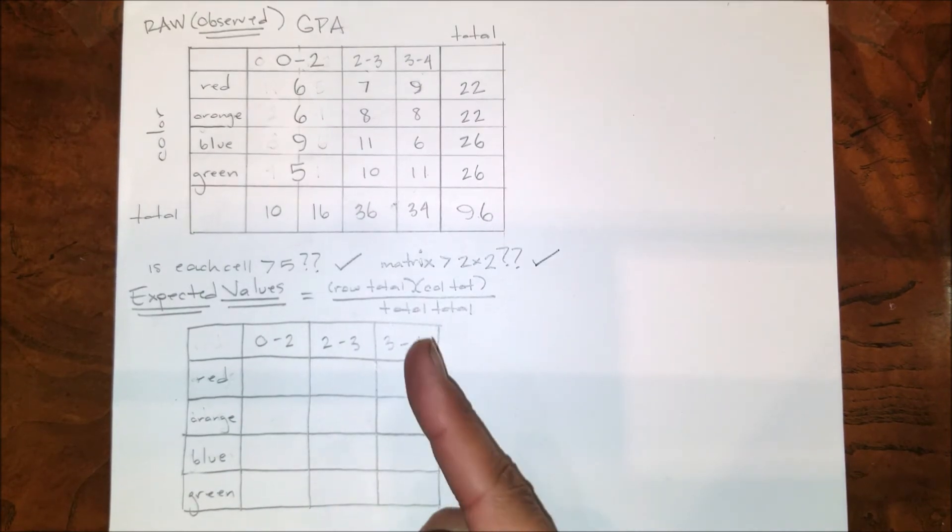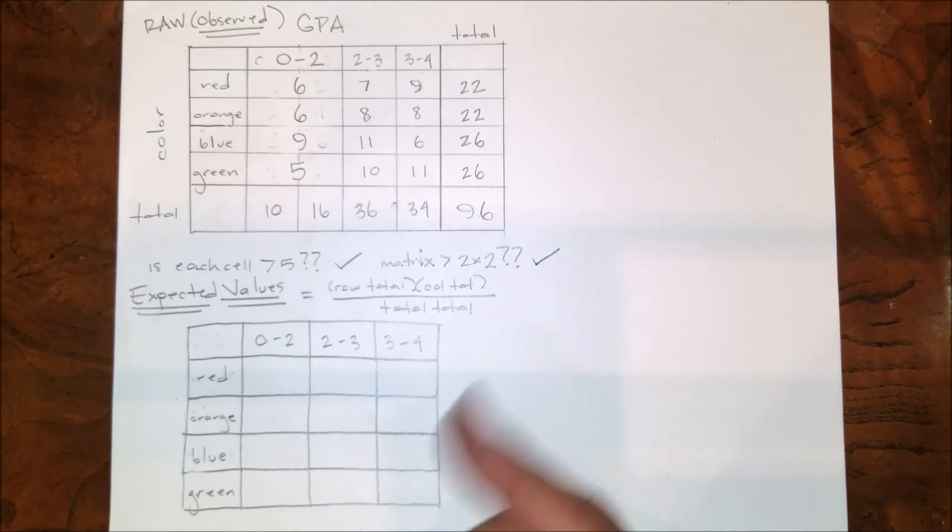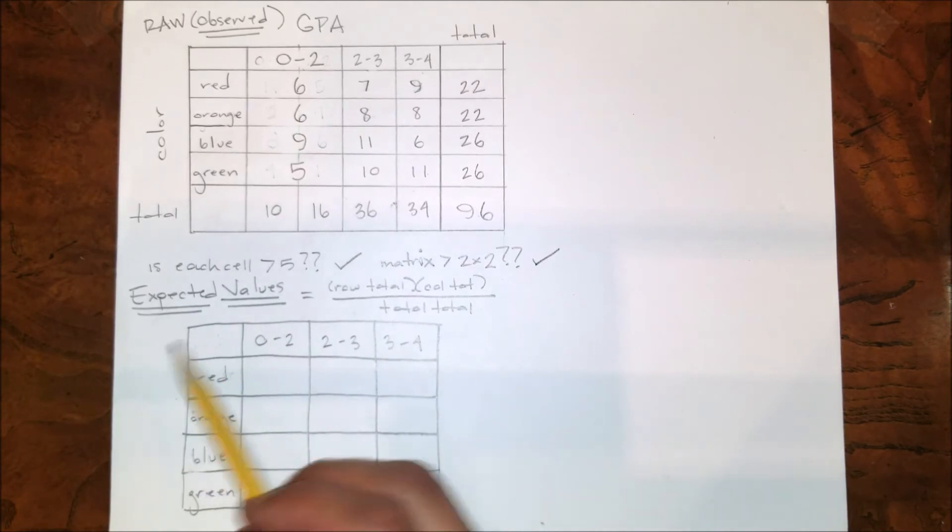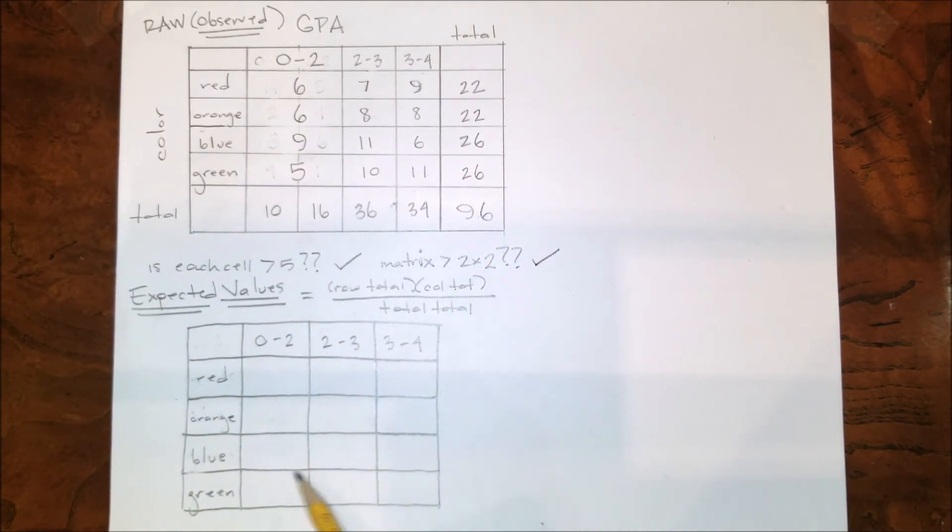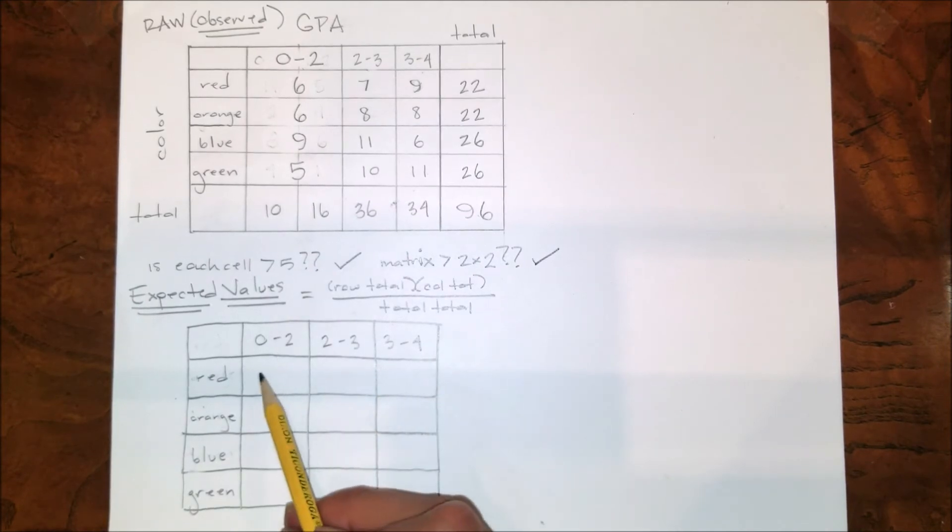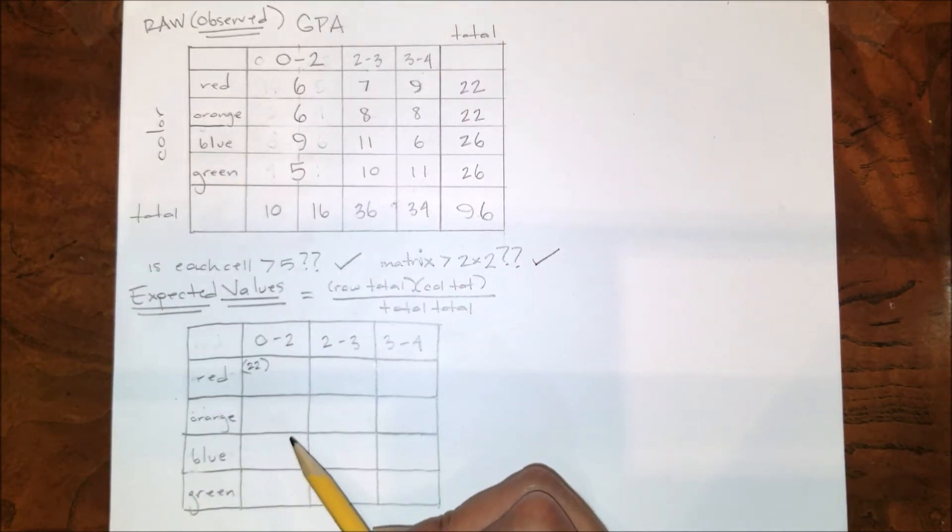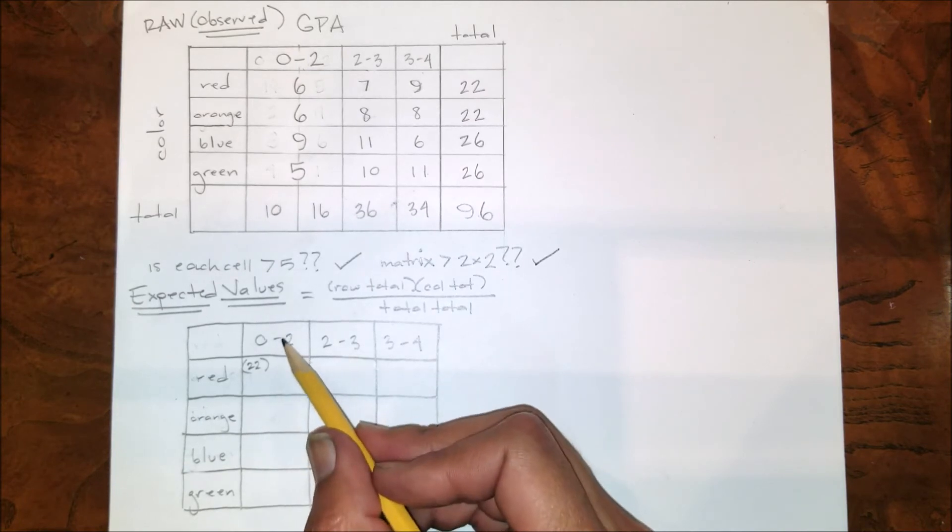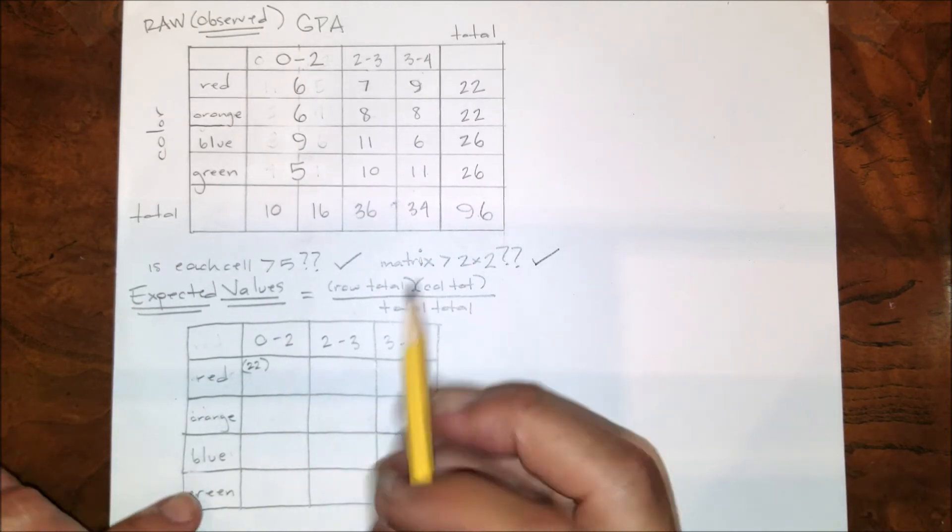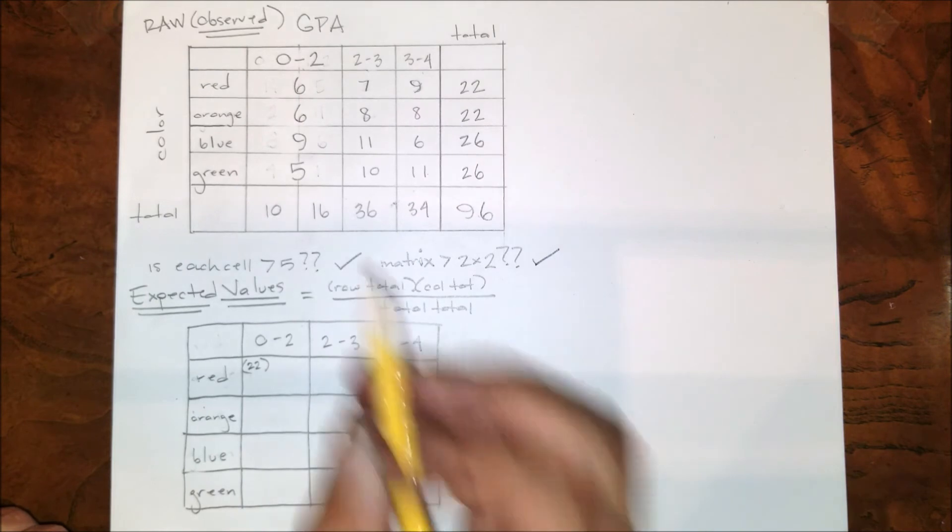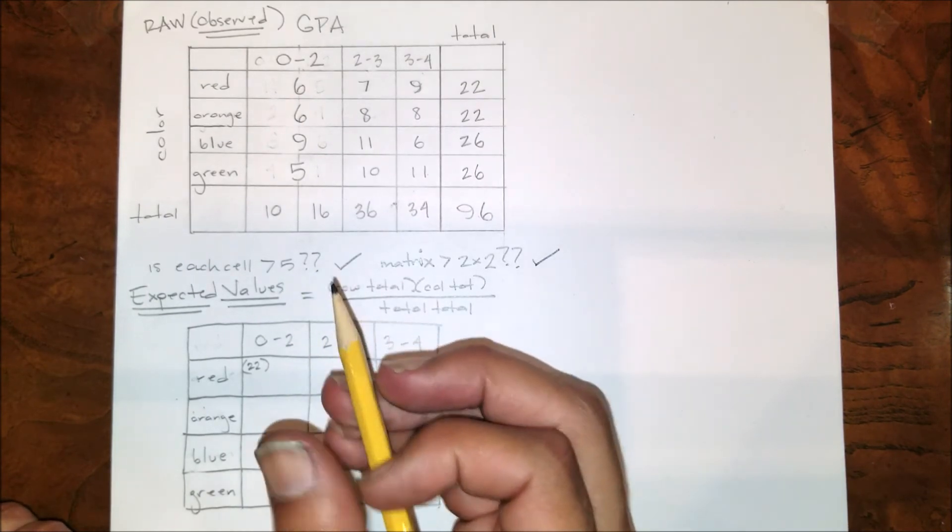Row total times column total over total total. Now we have to calculate the expected value for each one of these cells one at a time, and that's exactly what we're going to do. So to find the expected value for this cell for red between zero and two, I need the row total for red - 22. I also need the column total for zero to two - oh, forgot about that up there, let's fix that now - 26. And that column total goes here, 26.